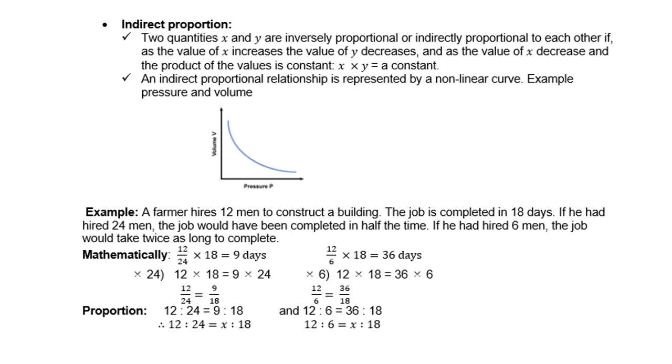So if you work it out mathematically, 12 over 24 times 18 gives you 9 days. And the other one is 12 over 6 times 18 gives you 36 days. So that makes perfectly sense. So the proportions then, 12 is to 24 equals to 9 is to 18. And of course, you can say 12 is to 6 is 36 is to 18. So there you are. Indirect proportion.